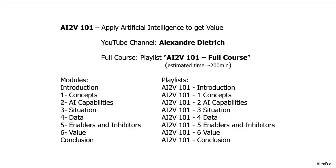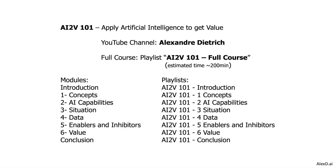The course is divided into 8 modules: the Introduction module, which is part of this video, then Module 1 Concepts, Module 2 AI Capabilities, Module 3 Situation, Module 4 Data, Module 5 Enablers and Inhibitors, Module 6 Value, and then the Conclusion.